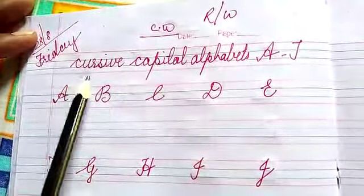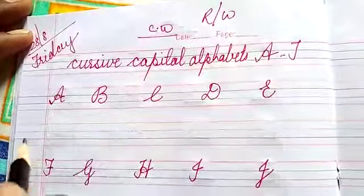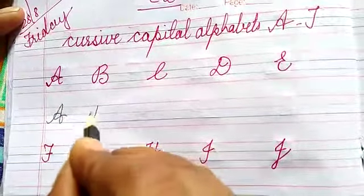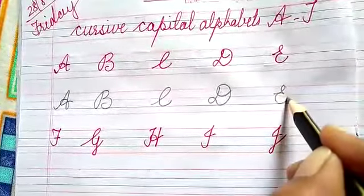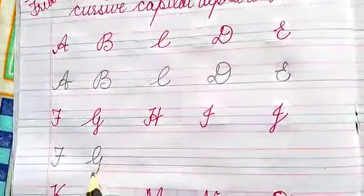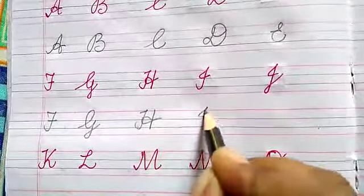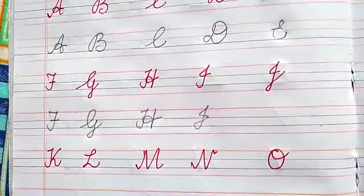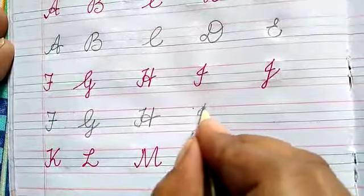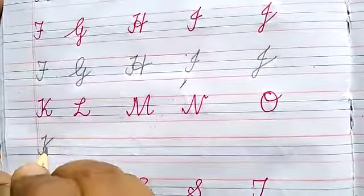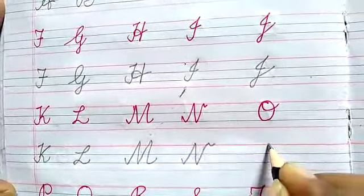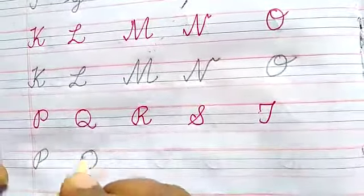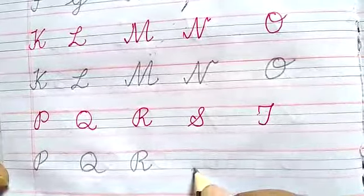Now, revision work. Cursive capital alphabet A to T. See here how to write. A, B, C, D, E, F, G, H, I, J, K, L, M, N, O, P, Q, R, S, and T. Okay children, write very neatly.